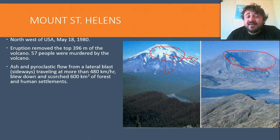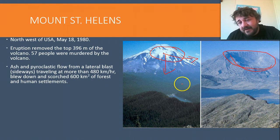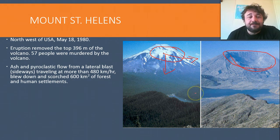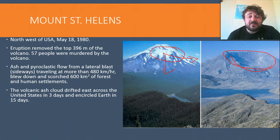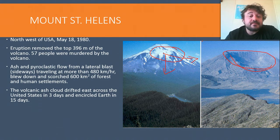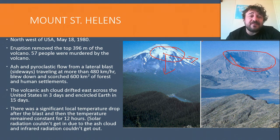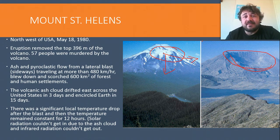The blast blew down and scorched about 600 square kilometers of forest and human settlements. There was a river there - that river doesn't exist anymore. The volcanic ash cloud drifted east with the wind across the United States in three days, and had gone all the way around the Earth in about 15 days. Locally, there was a significant temperature drop after the blast, and then the temperature remained constant for 12 hours, due to solar radiation that couldn't get in and infrared that couldn't get out - until the ash started to clear.